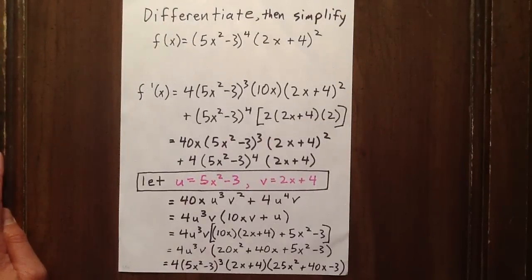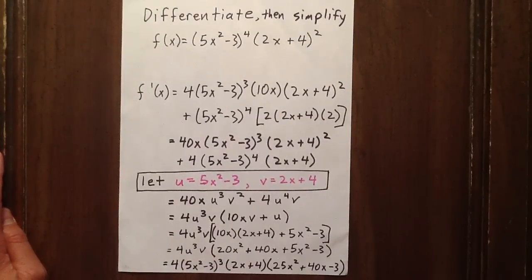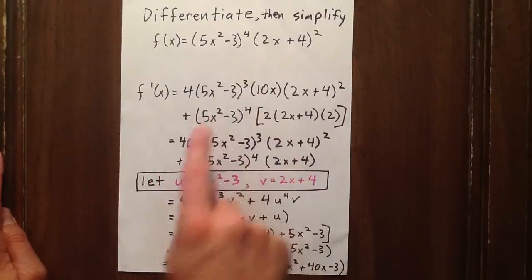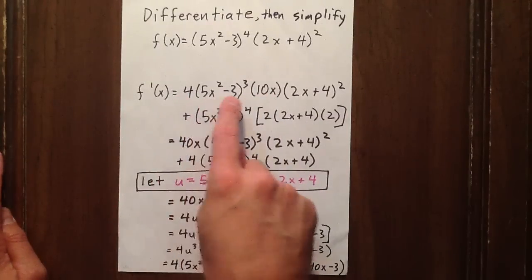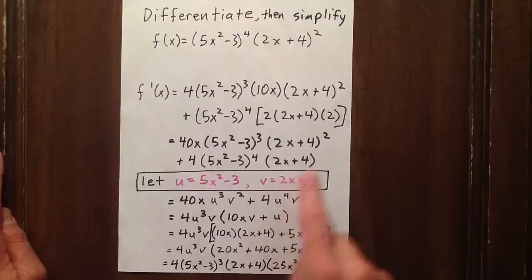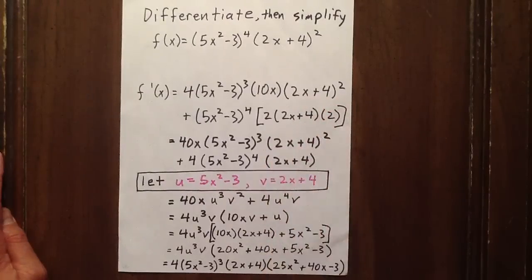Now we can simplify this. It just takes a little bit of hard work. We see that 4 times 10x is 40x, and we have 3 factors of 5x squared minus 3 and 2 factors of 2x plus 4.